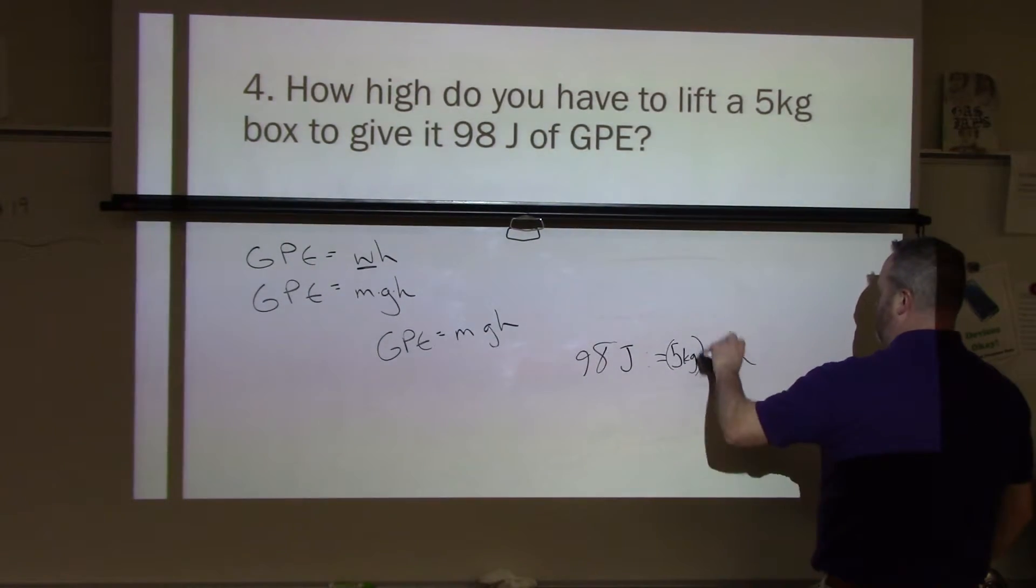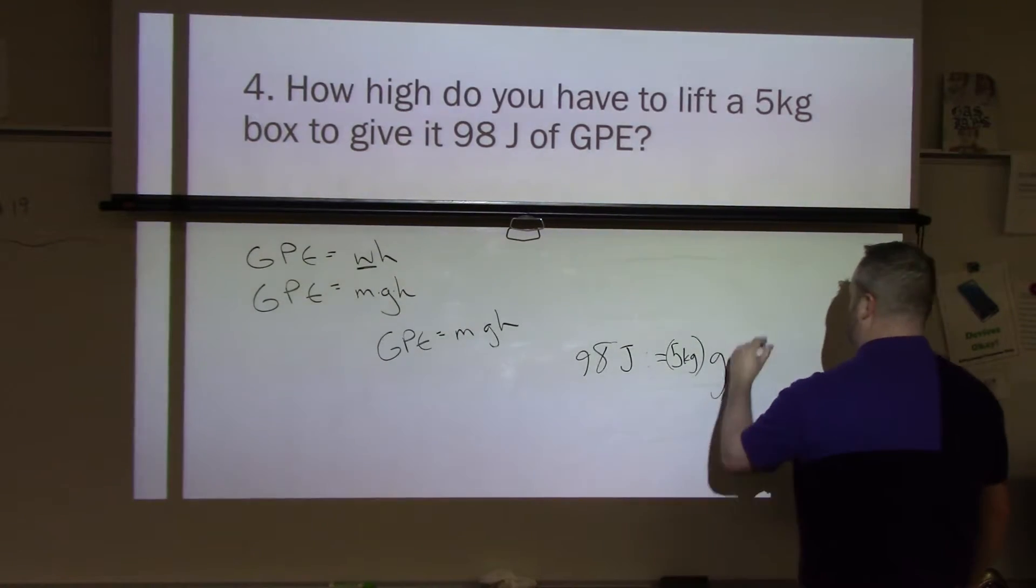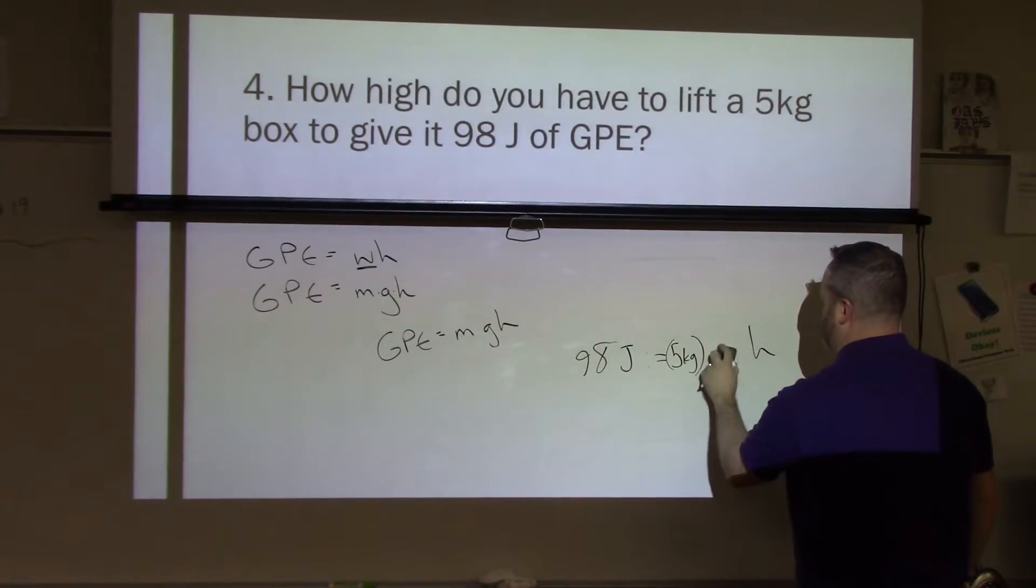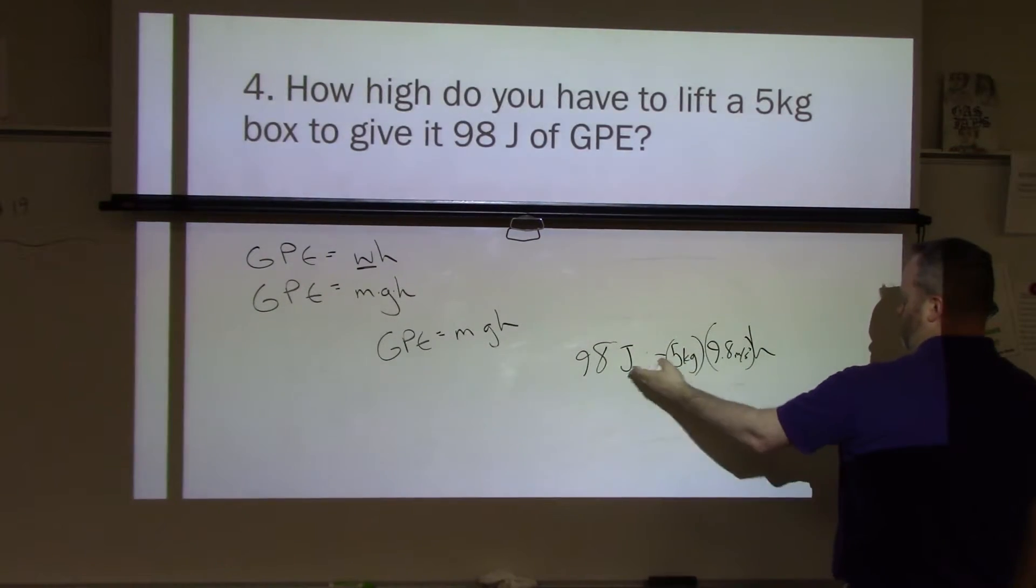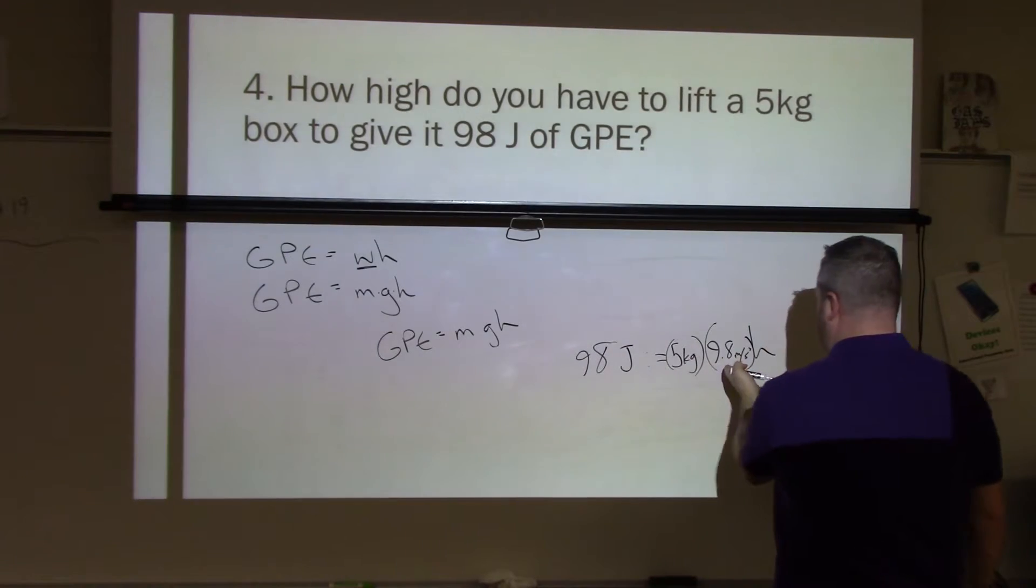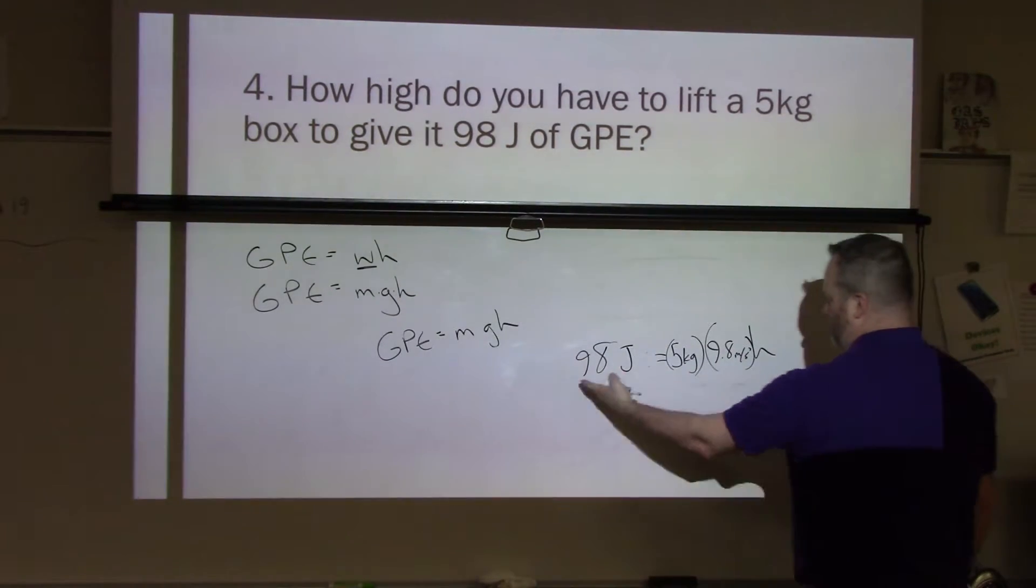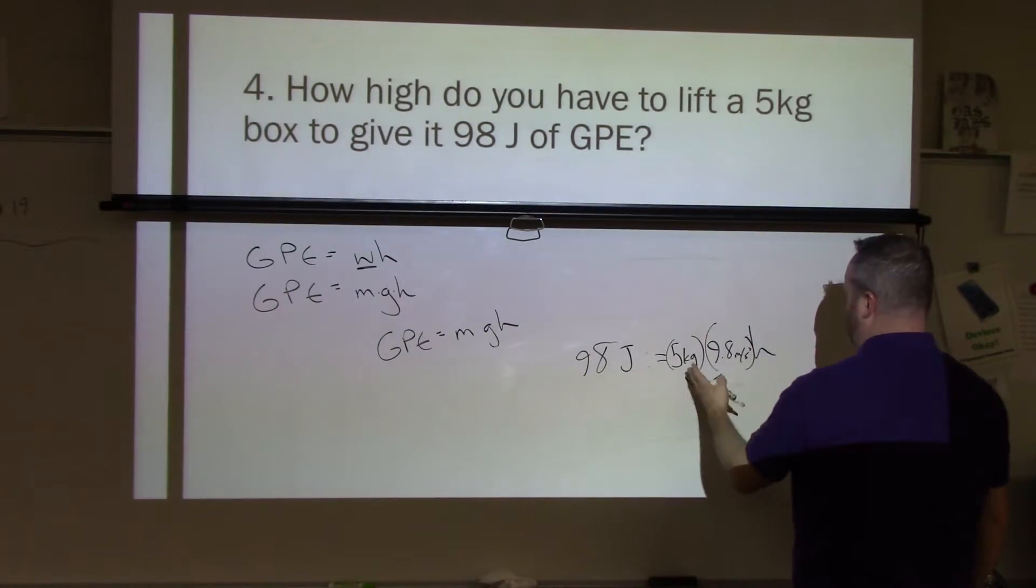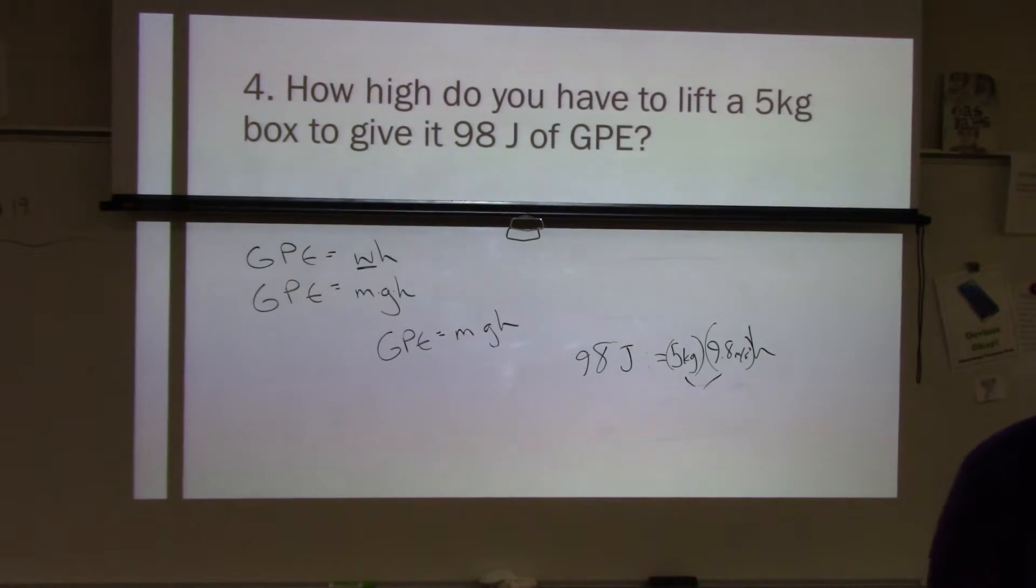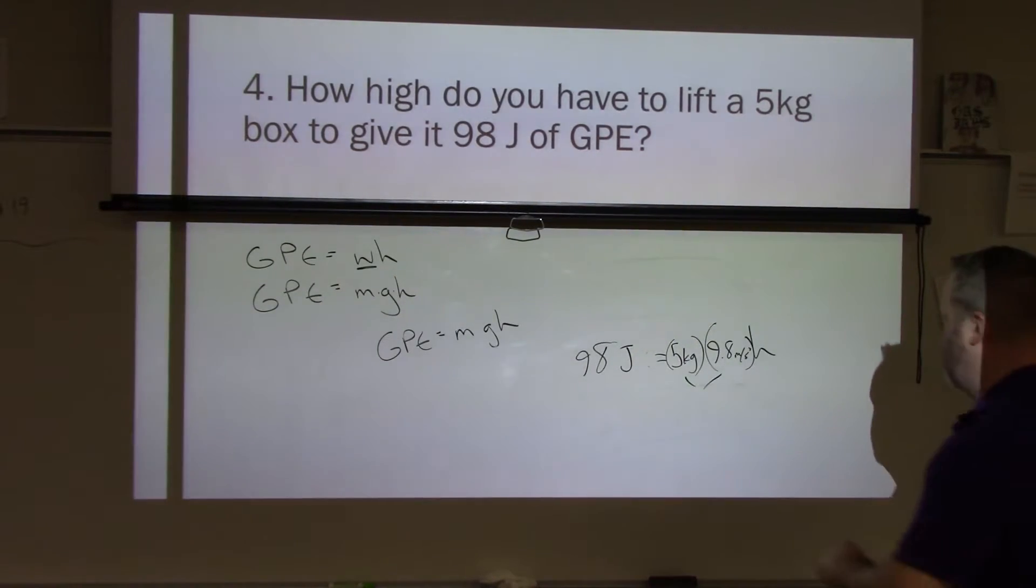And we're going to say gravity is 9.8. Let's just take a moment to be precise today. So 9.8 meters per second squared. So five times 9.8 times height equals 98. So let's simplify everything. We're going to go ahead and multiply five times 9.8 and see what we get for that. So five times 9.8 is going to give me 49.